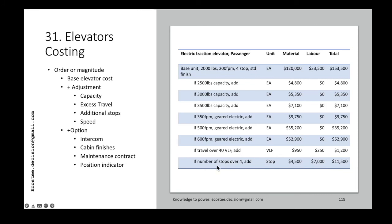For more than four stops, you add the cost of call buttons and associated components — approximately $11,000 for each additional stop. You combine all these adjustments to arrive at the approximate total cost of your elevator.